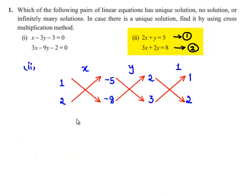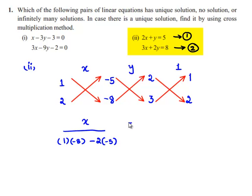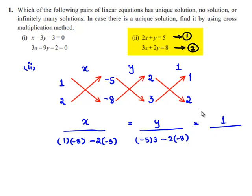By cross multiplication we can write x divided by 1 multiplied by minus 8 minus 2 multiplied by minus 8, is equal to y divided by minus 5 multiplied by 3 minus 2 multiplied by minus 8, is equal to 1 divided by 2 multiplied by 2 minus 3 multiplied by 1.